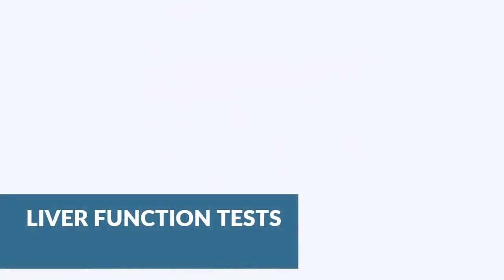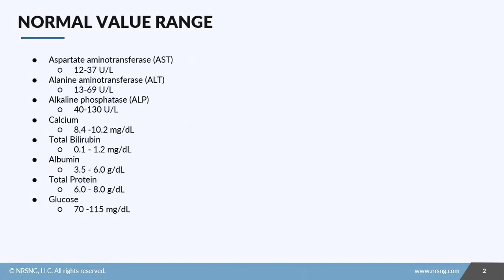In this lesson we're going to talk about liver function tests. When we do liver function tests, we look at multiple different values. The first three are the liver enzymes: specifically aspartate aminotransferase (AST), alanine aminotransferase (ALT), and alkaline phosphatase (ALP). The normal levels are AST 12–37, ALT 13–69, and ALP 40–130, all in units per liter.